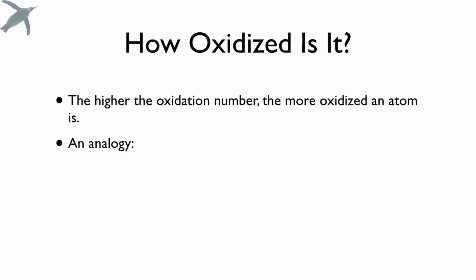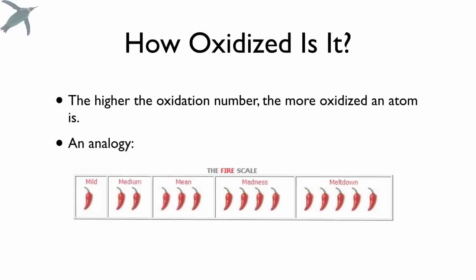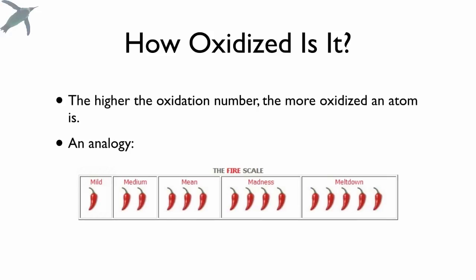There is an analogy — it's kind of like a fire scale. Everyone's comfortable with something like this. There are actual units called Scoville units of spiciness of capsaicin. But I think everybody gets that the more little chili peppers you have, the hotter that salsa is going to be. So we're going to look at the possible oxidation states of carbon. You need to remember that carbon needs four bonds to fill its valence shell, so carbon will always need four covalent bonds.